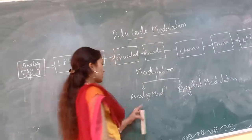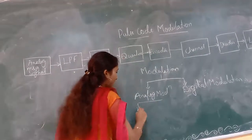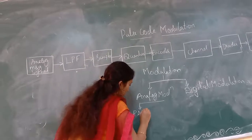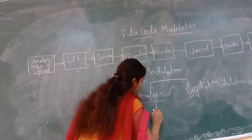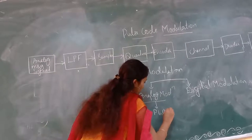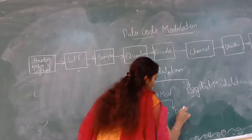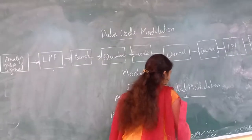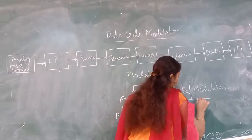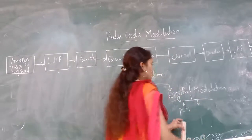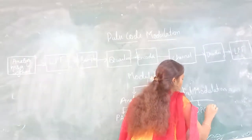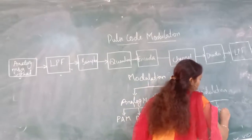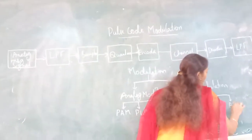In analog modulation, it is again classified into pulse amplitude modulation, pulse rate modulation, and pulse position modulation. In digital modulation, it is classified into PCM — pulse code modulation — DPCM — digital pulse code modulation — delta modulation, and adaptive delta modulation.